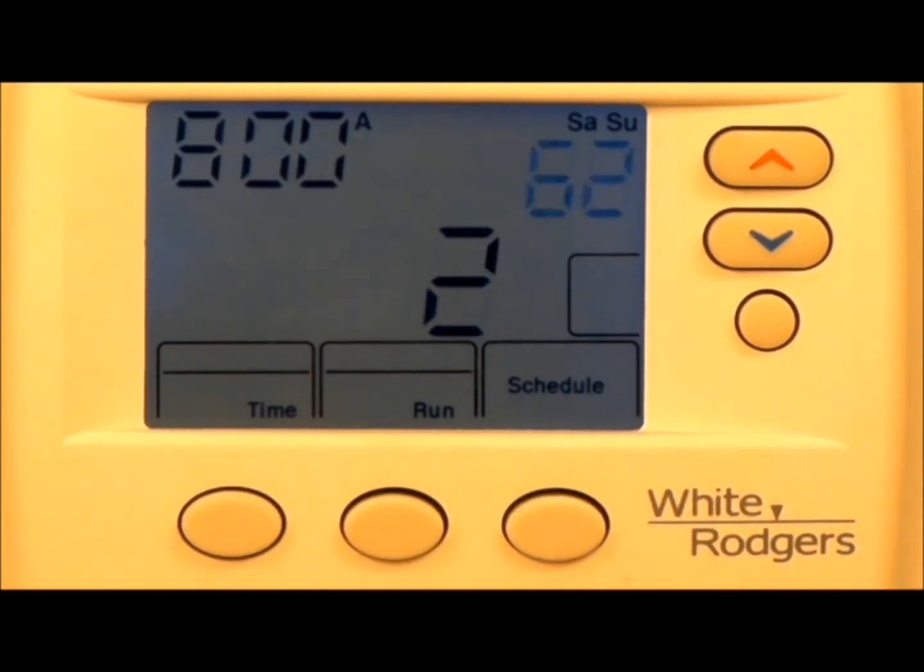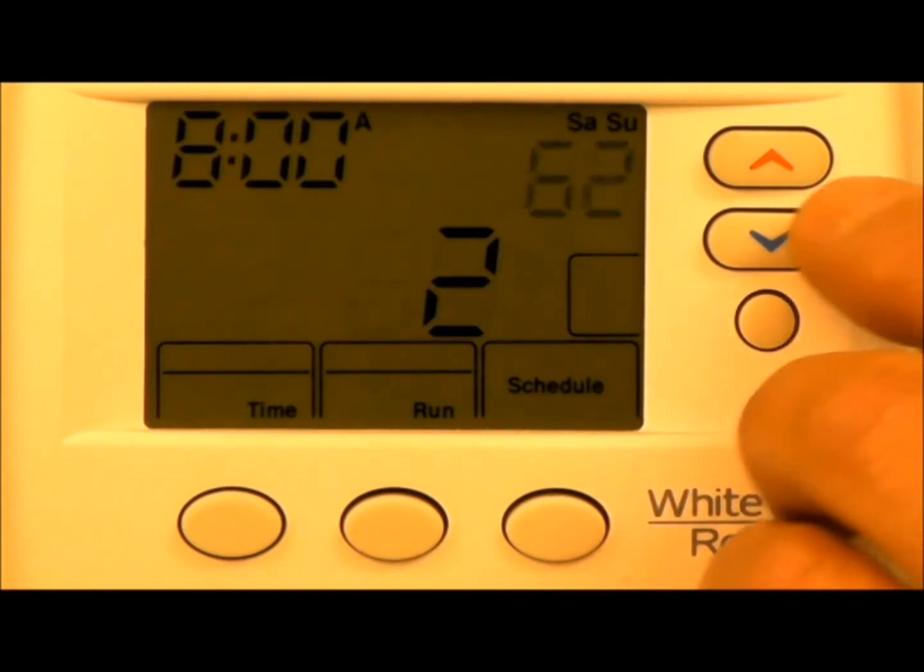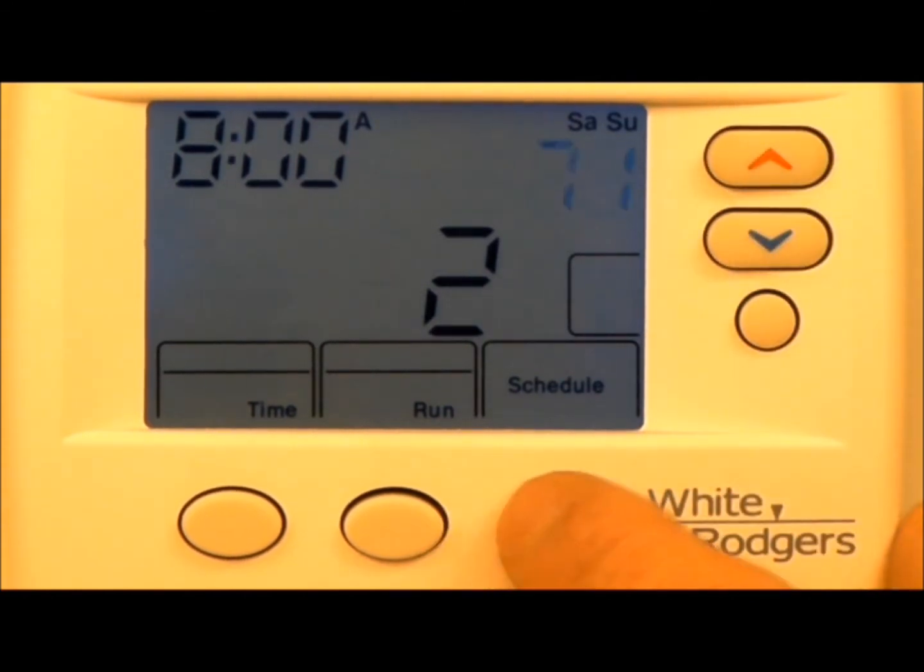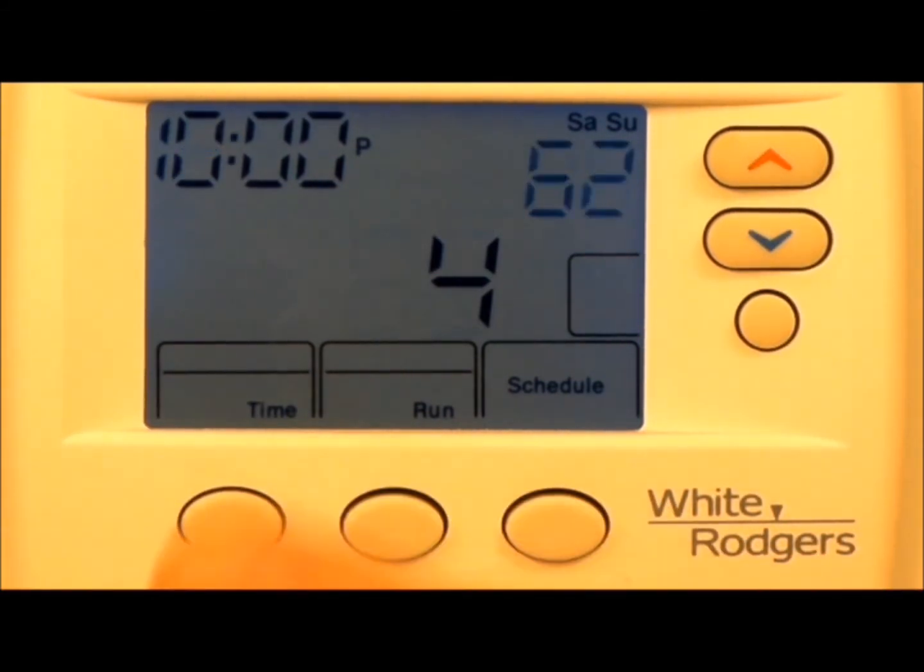Schedule 2, 8 a.m. Now typically I'm going to have somebody home throughout the weekend. Whether I'm gone out shopping or my wife's gone to do groceries, my kids will be home so typically someone will be home. We're going to maintain a constant 71 throughout the day. Schedule 3, 5 p.m. 71.